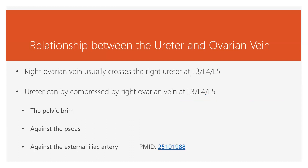The ovarian vein usually crosses the ureter at L3, L4, or L5, somewhere in there. Since that's a natural crossing point, the body is a little more forgiving in that area.